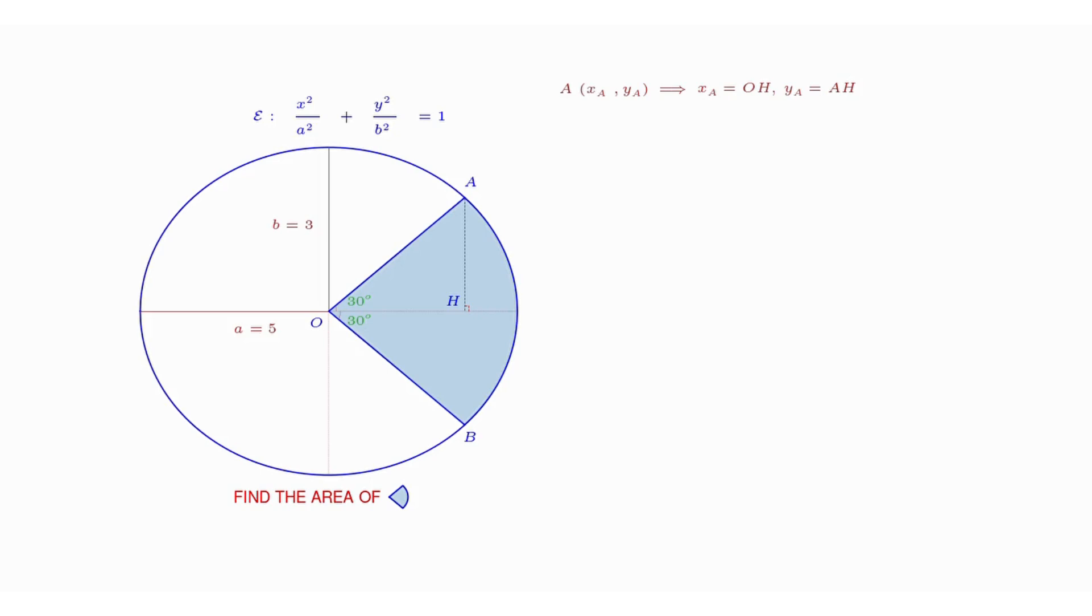As angle HOA equals 30 degrees, we obtain y_A equals x_A divided by square root of 3. Also, point A lies on the ellipse, so it should satisfy the equation representing the ellipse. Therefore, it is straightforward to determine the values of x_A and y_A. Note that point A lies in the first quadrant of the plane, so x_A and y_A are positive.